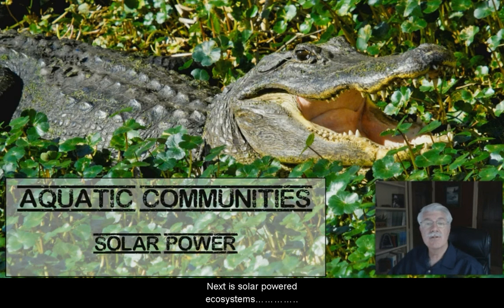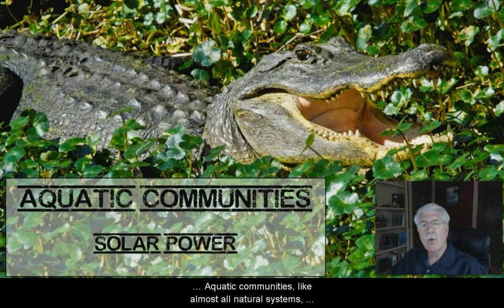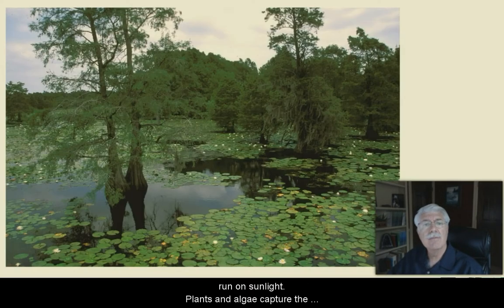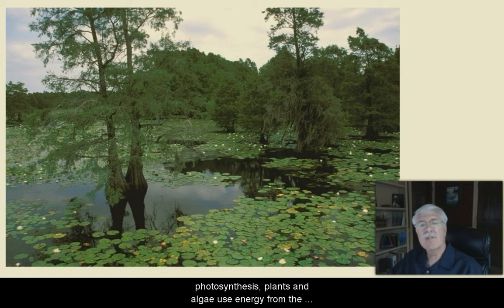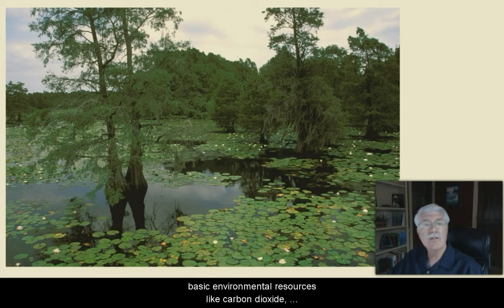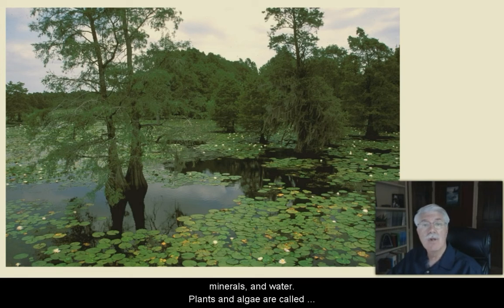Solar-powered ecosystems. Aquatic communities, like almost all natural systems, run on sunlight. Plants and algae capture the sun's energy. Then, by the process of photosynthesis, plants and algae use energy from the sunlight to make food and oxygen for themselves out of basic environmental resources like carbon dioxide, minerals, and water.